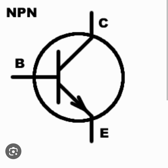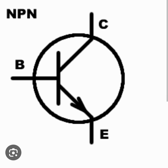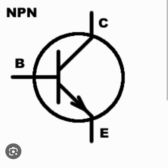Now the symbol shows you have a collector, a base, and an emitter. The direction of the arrow shows the direction of the current. It shows that the current flows from collector to the emitter, neglecting the current into the base.